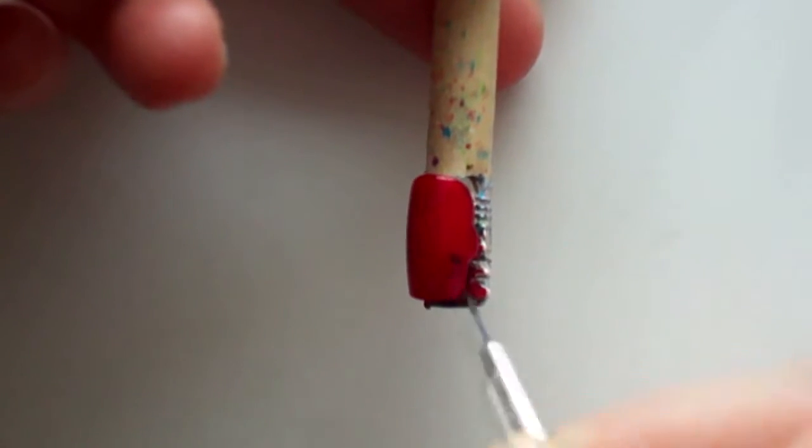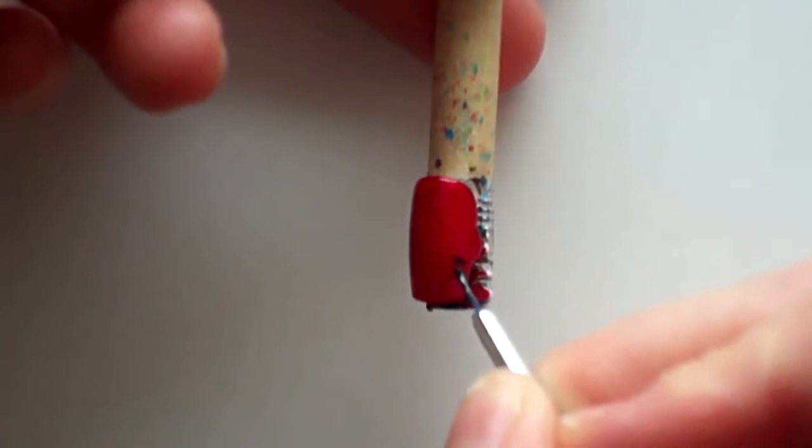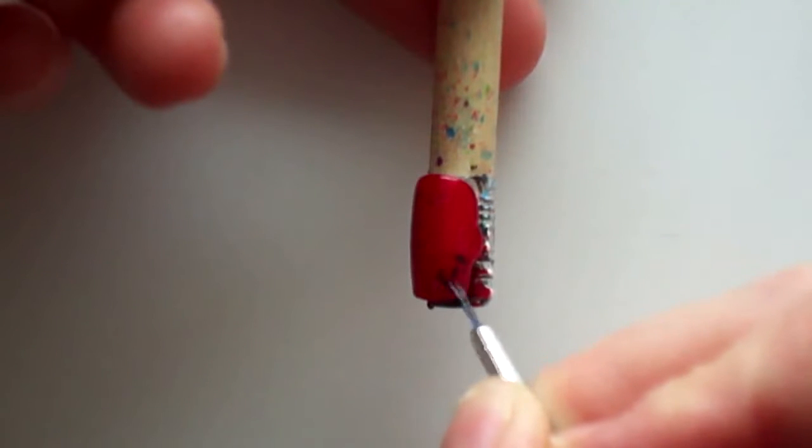To create a rose, simply paint a small C shape with a dot in the middle, and then flattened out C shapes all around it until you're happy with the roses.